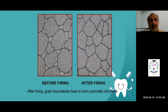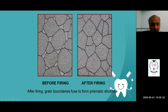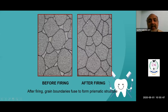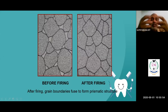Before firing, if you look at the ceramic particles, you can see water in between them. After firing, the water content comes out, the ceramic molecules have no water in between, they become tightly bonded, inter-atomic bonding increases, and the strength of ceramic increases.